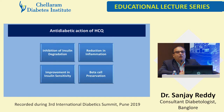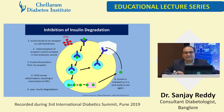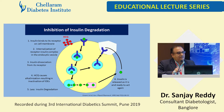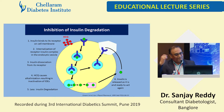How does hydroxychloroquine act? There are four ways: it inhibits insulin degradation, improves insulin sensitivity, reduces inflammatory markers, and preserves beta cell mass. Regarding inhibition of insulin degradation — after insulin binds to receptors, internalization of the receptor-insulin complex occurs in the endosomal vesicle, followed by insulin dissociation from its receptor. HCQ causes alkalization at the receptor level, resulting in inactivation of insulin-degrading enzymes. So there is more insulin available and less degraded, which may improve glycemic outcomes.